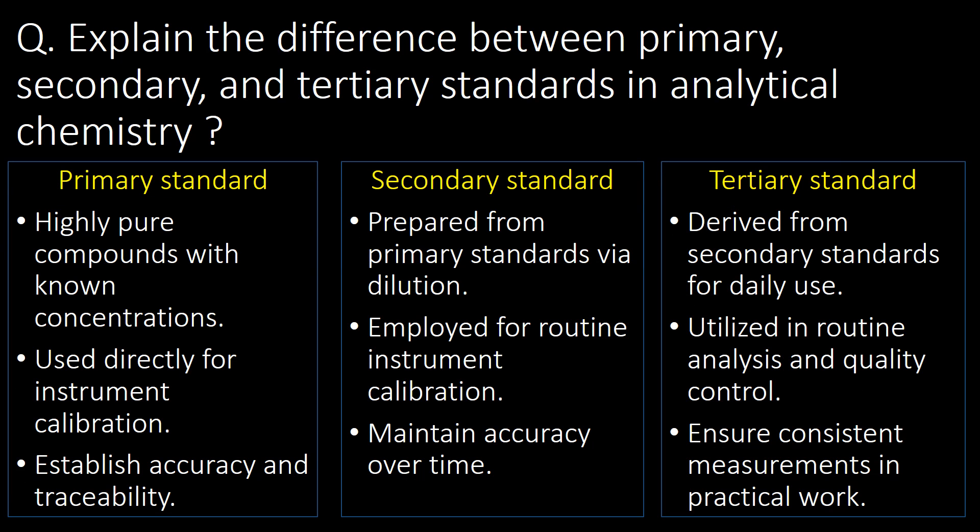Explain the difference between primary, secondary, and tertiary standards in analytical chemistry. Primary standards are highly pure compounds with known concentrations used directly for instrument calibration, establishing accuracy and traceability. Secondary standards are prepared from primary standards via dilution and are employed for routine instrument calibration, maintaining accuracy over time. Tertiary standards are derived from secondary standards for daily use, utilized in routine analysis and quality control, ensuring consistent measurements in practical work.